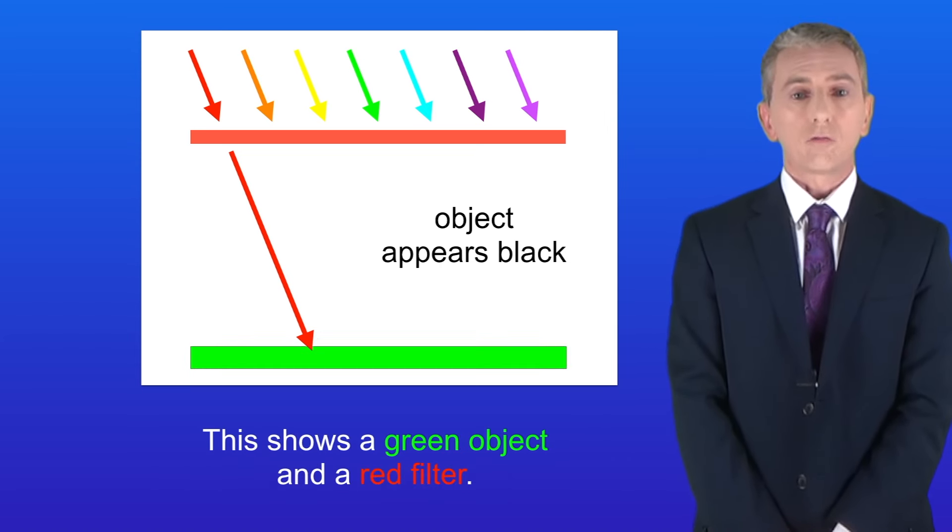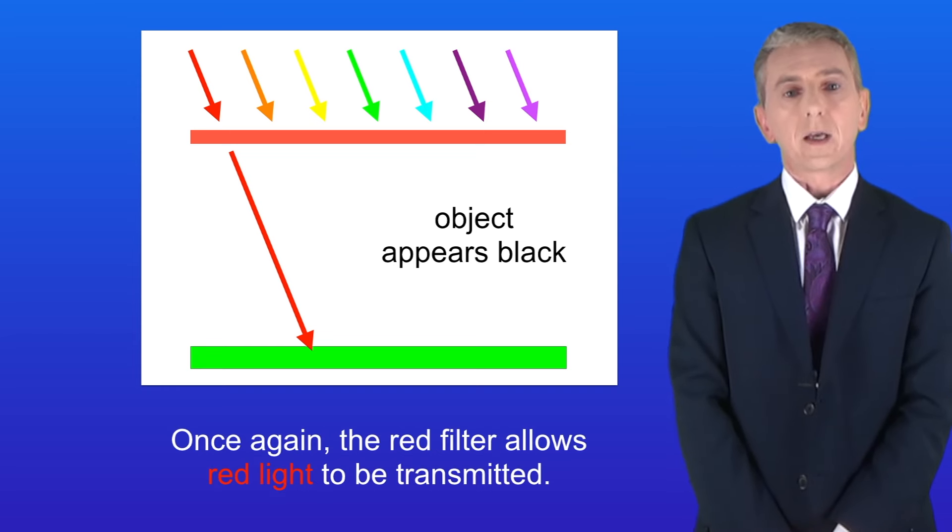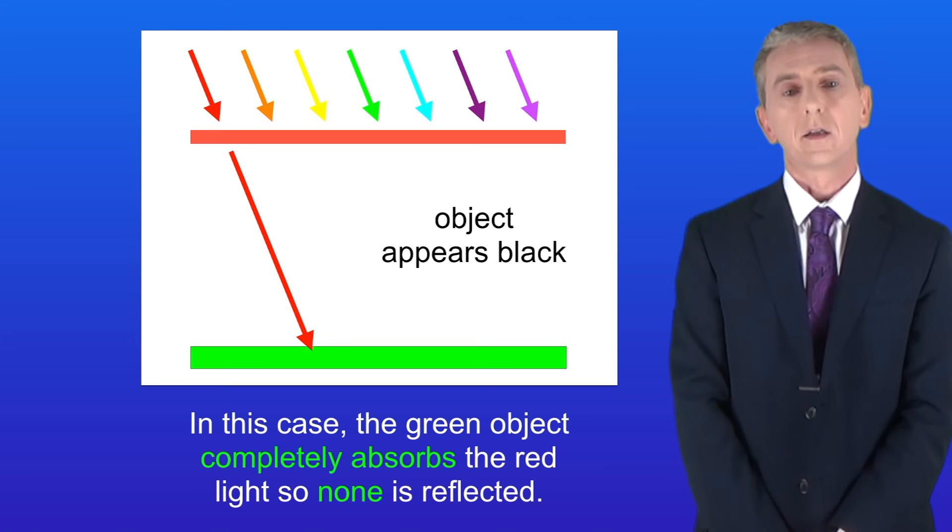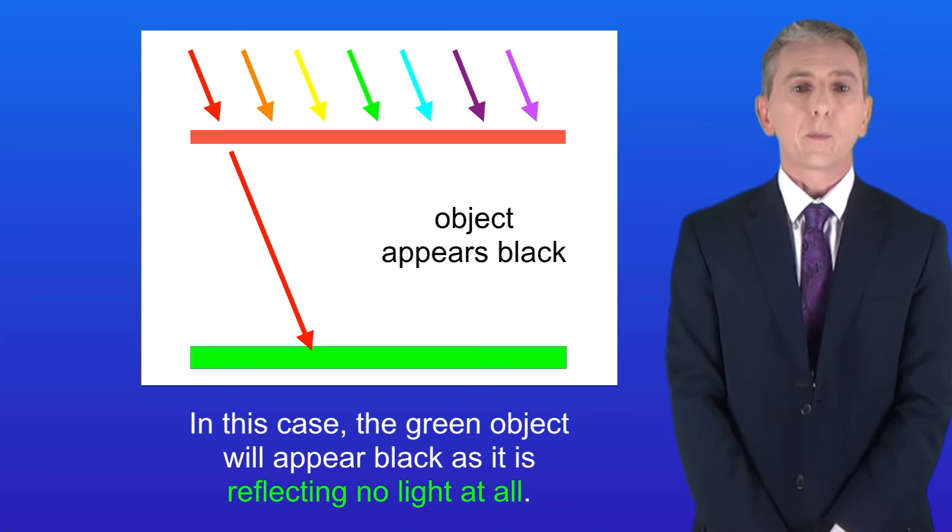This now shows a green object and a red filter. Once again, the red filter allows red light to be transmitted. However, in this case, the green object completely absorbs the red light, so none is reflected. In this case, the green object will appear black as it's reflecting no light at all.